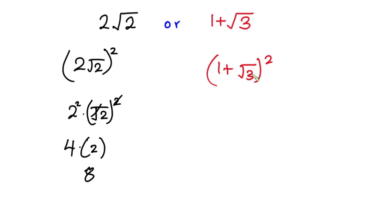For the right side, simplifying (1+√3)², we have 1 + 2√3 + 3. So 1 plus 3 is 4, plus 2√3.